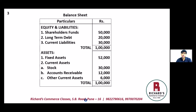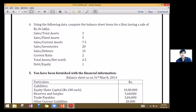Moving on to question number four. Using the following data, compute the balance sheet items for a firm with sales of rupees 36 lakhs. Given ratios: sales to total assets is 3, sales to fixed assets is 5, sales to current assets is 7.5, sales to inventories is 20, sales to debtors is 15, current ratio is 2, total assets to net worth is 2.5, and debt equity ratio is 1.